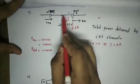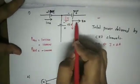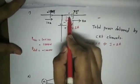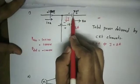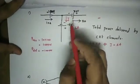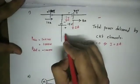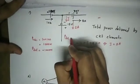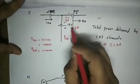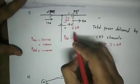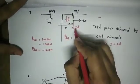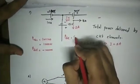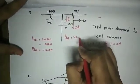Next, here 8A enters the negative terminal, so we need to find the delivered power. The delivered power is 8 into 80, which is 640 W.